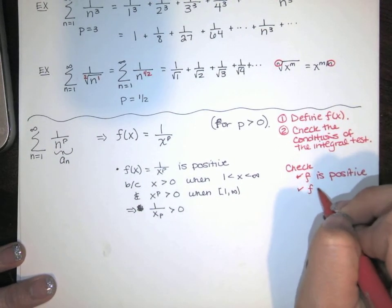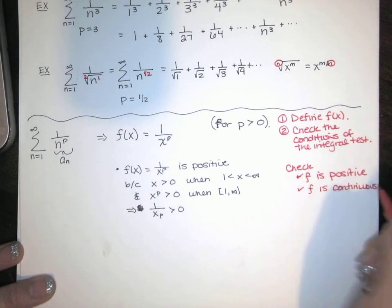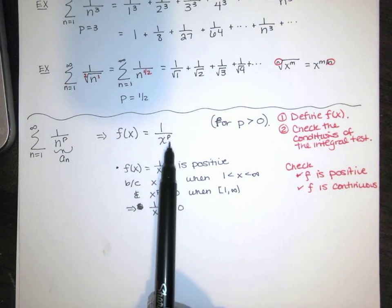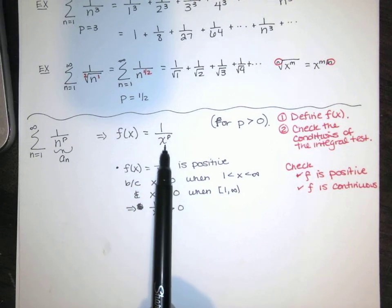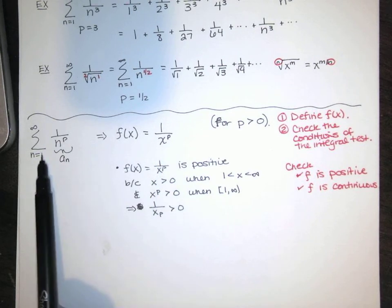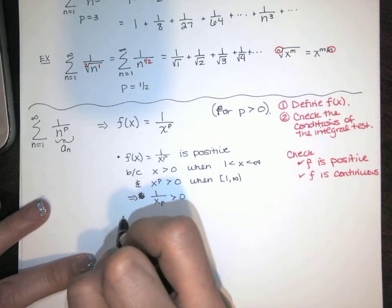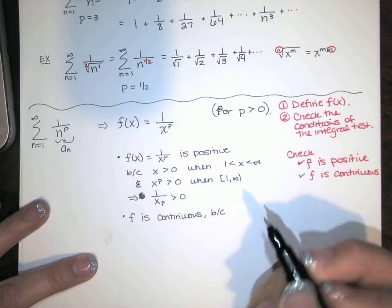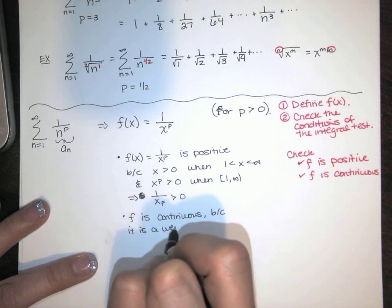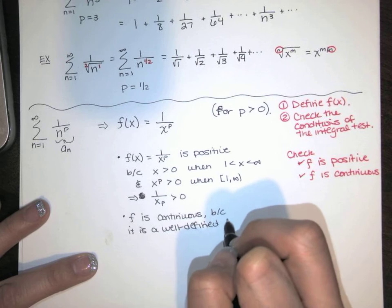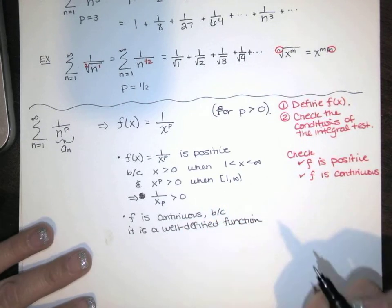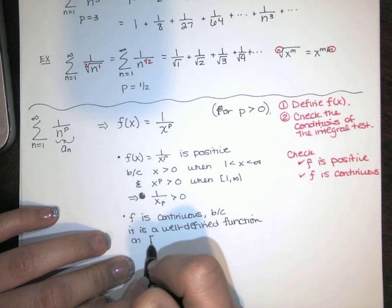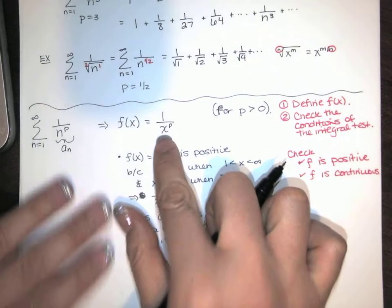The next thing we need to check is that f is continuous. Power functions are continuous, and this function is continuous as long as the denominator is not zero. The denominator is zero only when x equals zero, and x equals zero is not on our interval from 1 to infinity. So f is continuous — it's a well-defined function on that interval. ✓